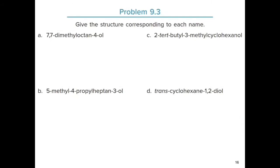Practice problem 3: give the structure corresponding to each name. For 7,7-dimethyloctan-4-ol, we have an 8-carbon chain (1 through 8). The hydroxy group is on the fourth carbon, and on the seventh carbon there is a dimethyl group. That gives the structure for this alcohol.